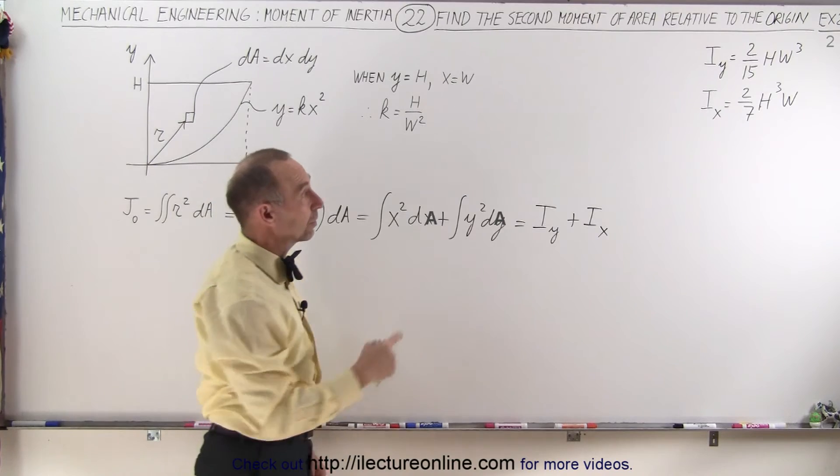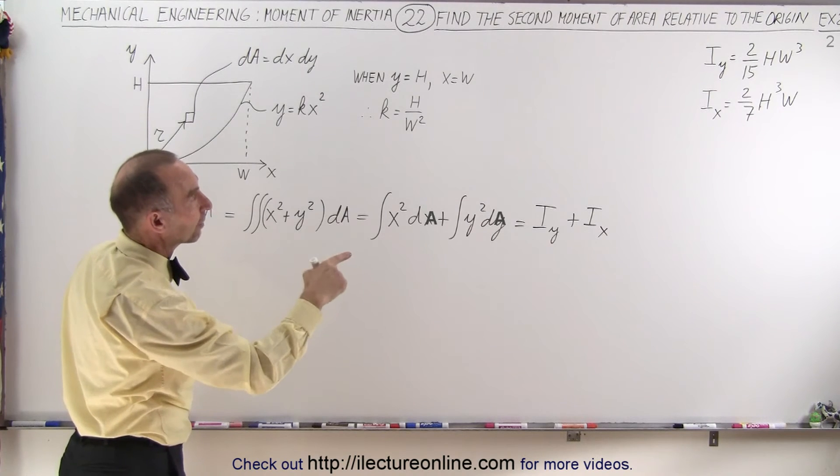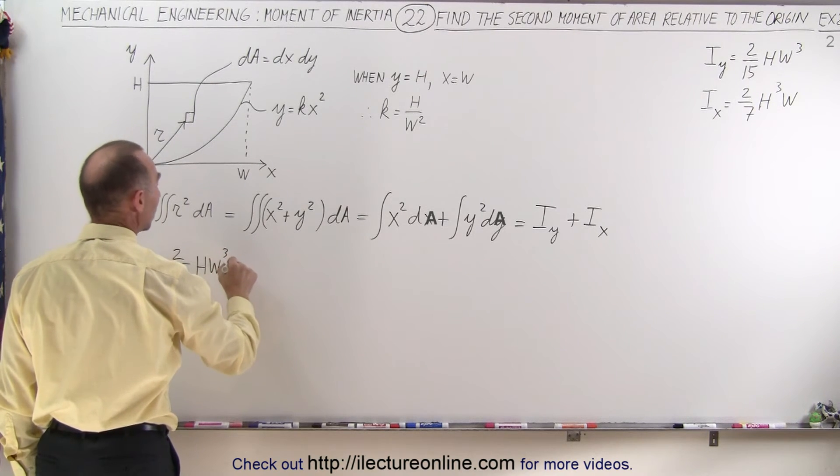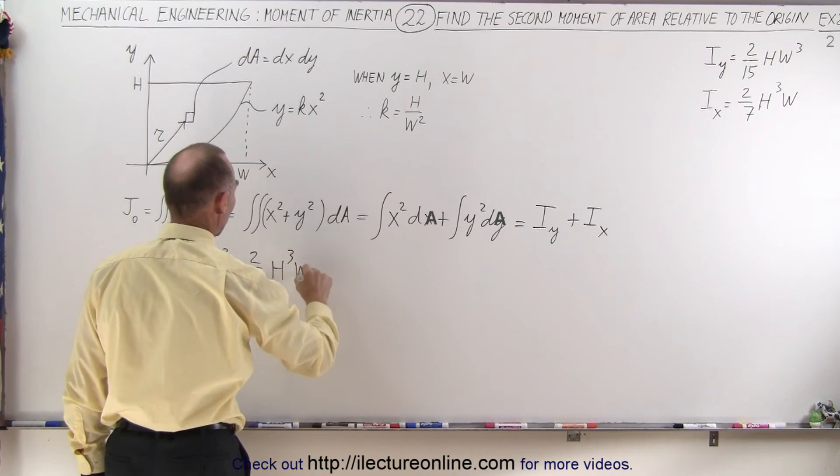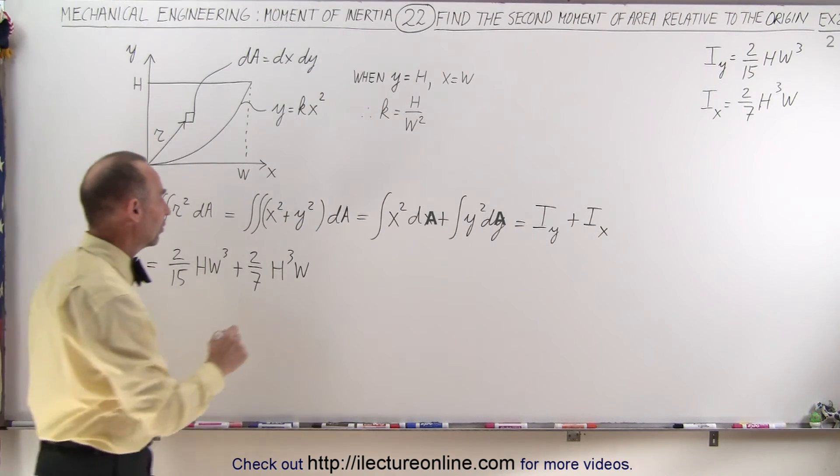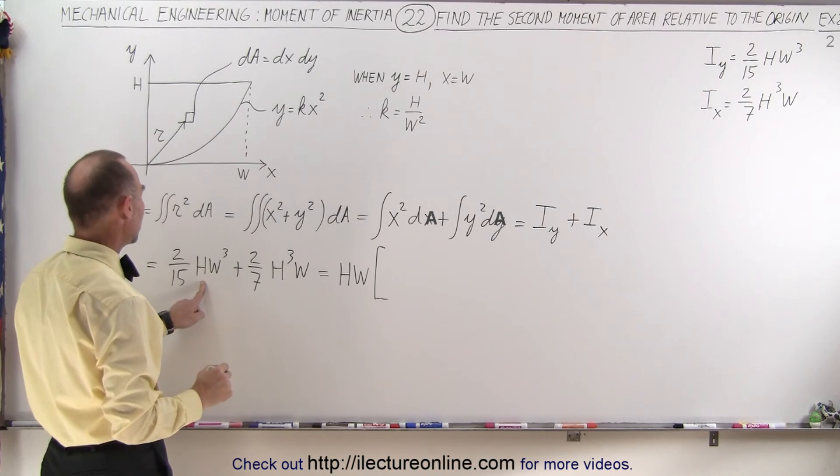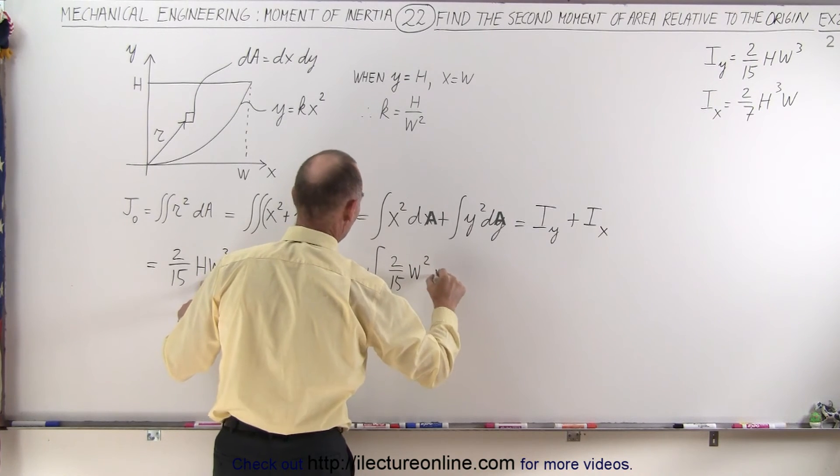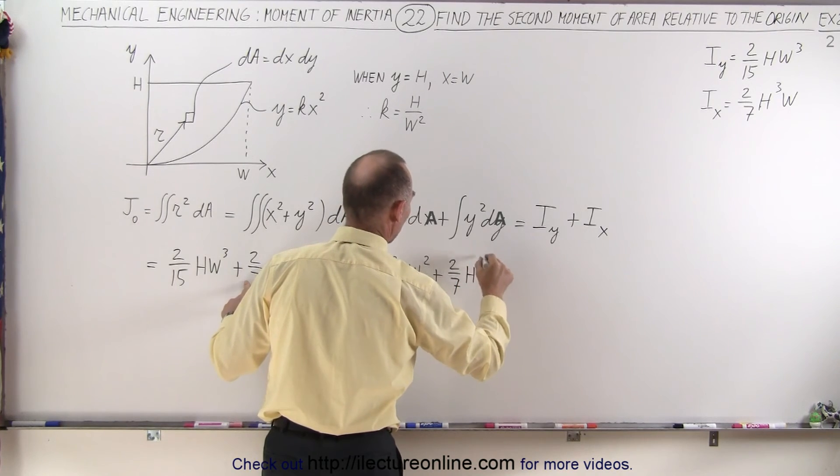And since we already worked out the solution to those two problems right there, we can then say that this must therefore be equal to i-sub-y, which is 2-15ths times h-w-cubed plus 2-7ths times h-cubed w. So what we can do here now is we can factor out an h and a w, so this can now be written as h times w times, here we're left with 2-15ths w-squared, plus here we have 2-7ths h-squared.